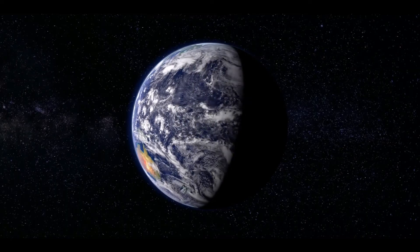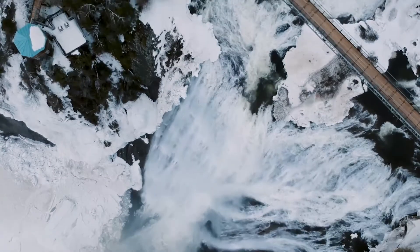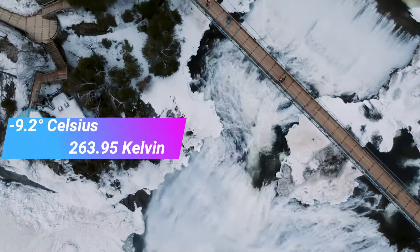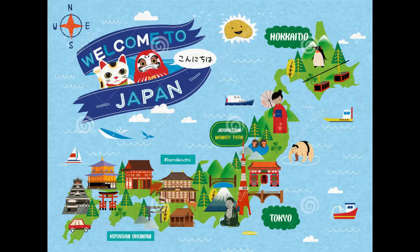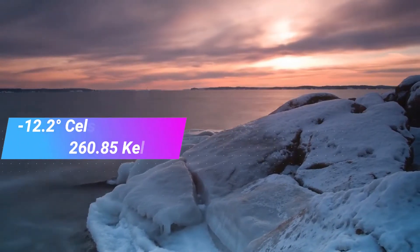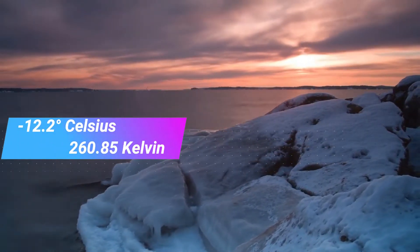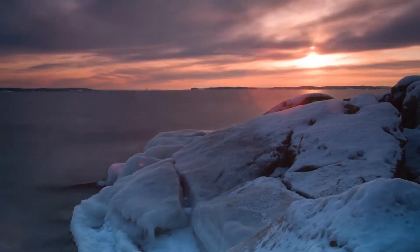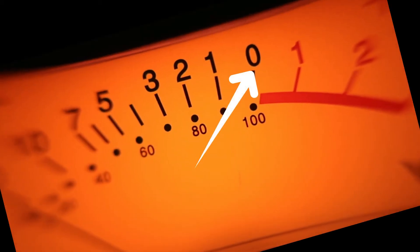Moving further, the temperature decreases to minus 9.2 degrees Celsius or 263.95 Kelvin — this is the average winter temperature of Japan. The hottest day recorded at the South Pole of the Earth was minus 12.2 degrees Celsius or 260.85 Kelvin, which was recorded on Christmas Day in the year 2011.